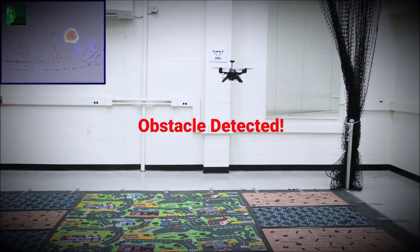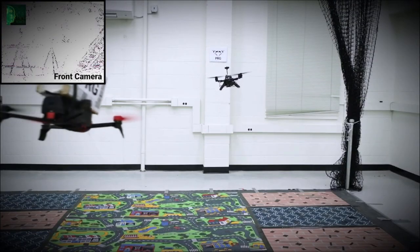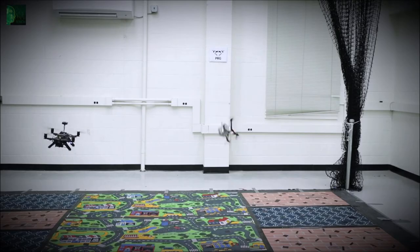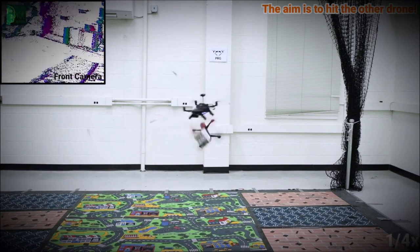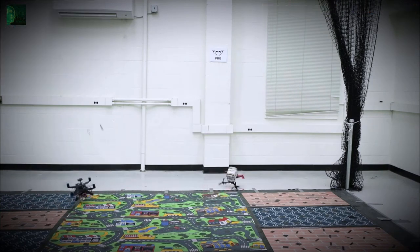We also apply the proposed strategy to evade fast dynamic objects such as drones and territorial birds. By merely reversing the control policy, we can also accomplish the pursuit task proving that our navigation stack can cater to different scenarios.